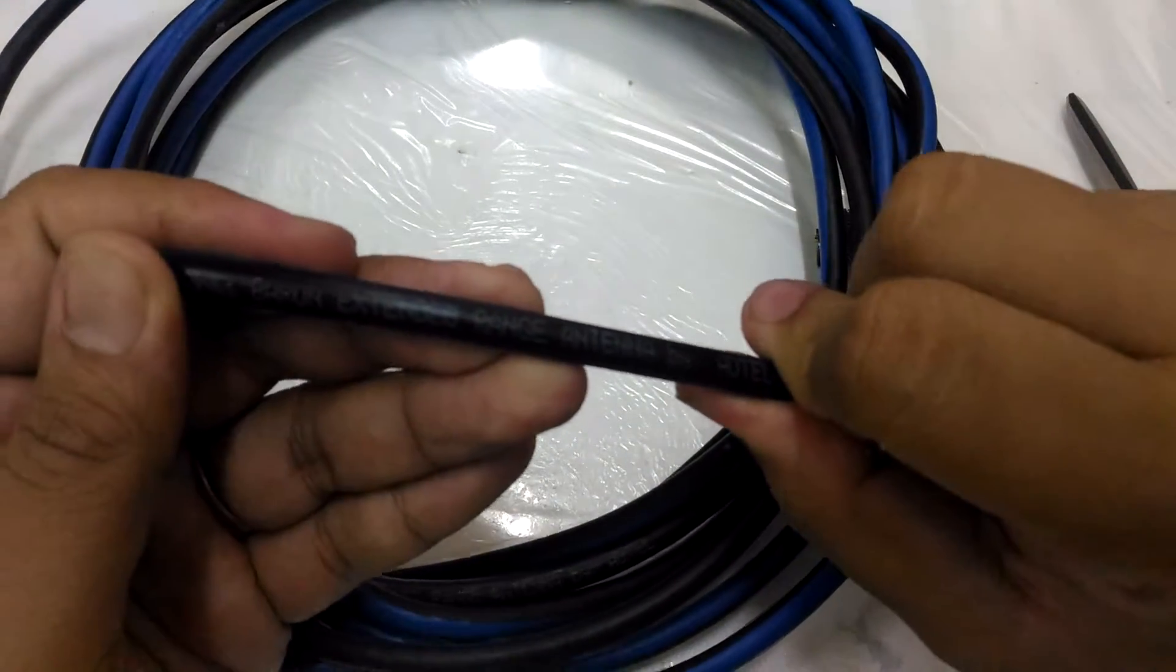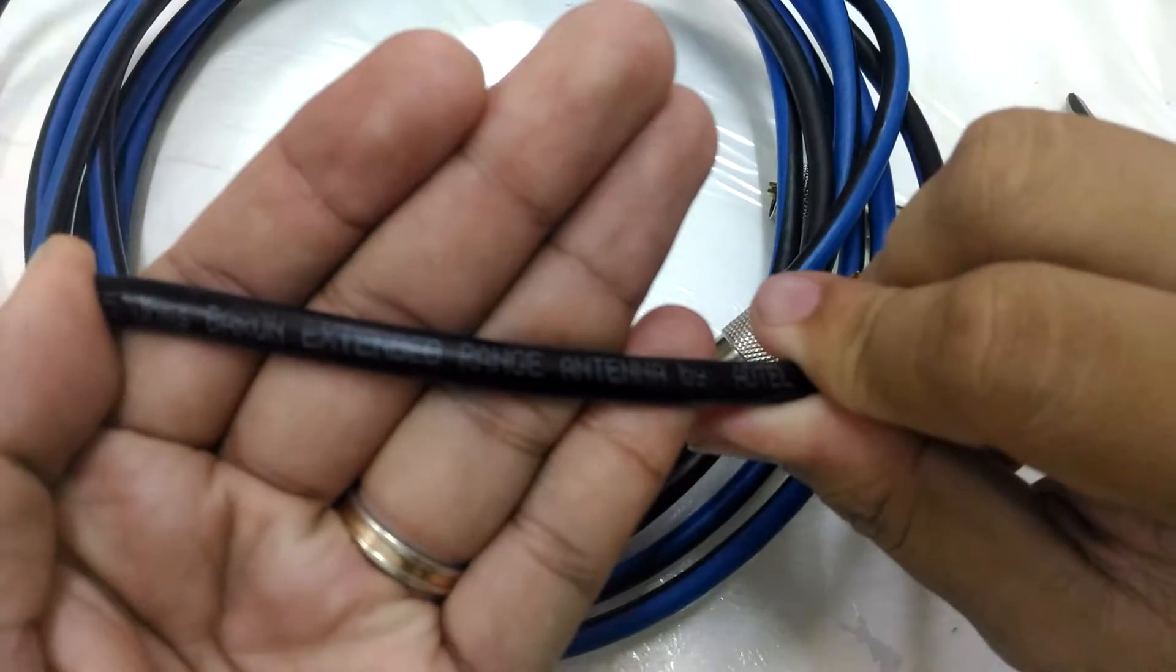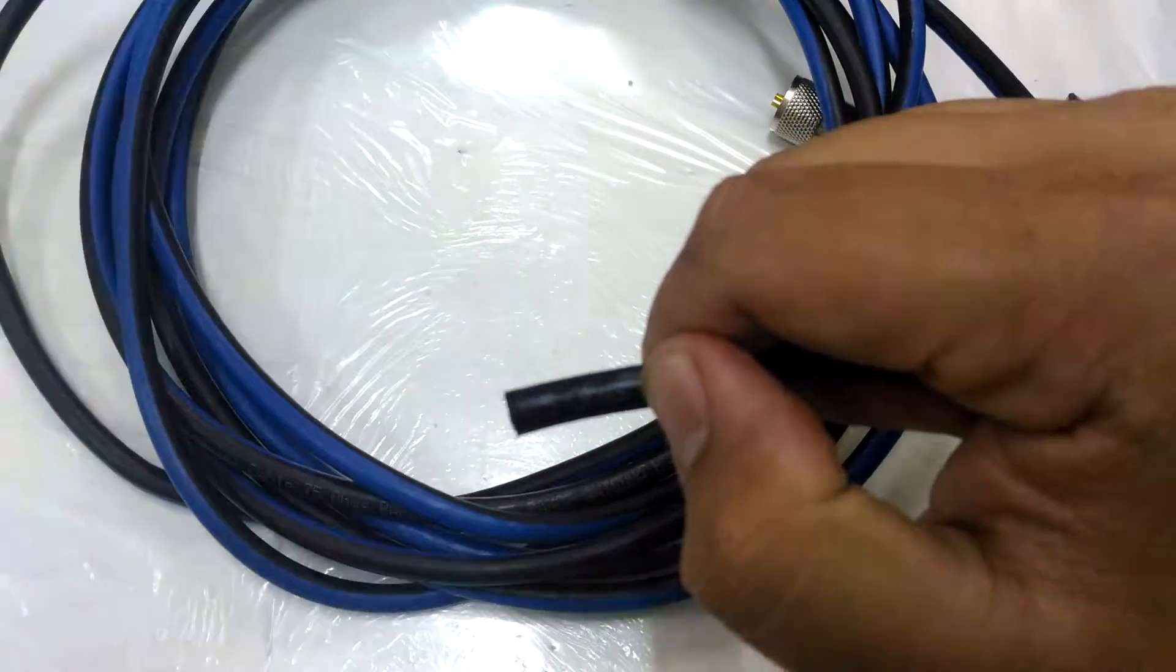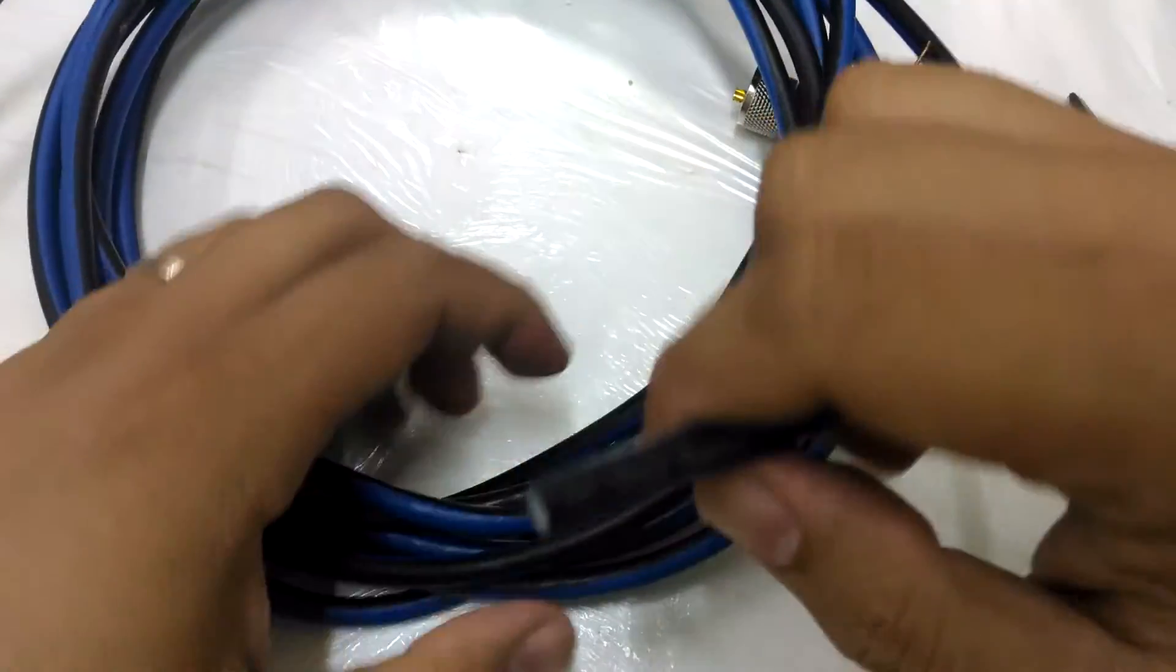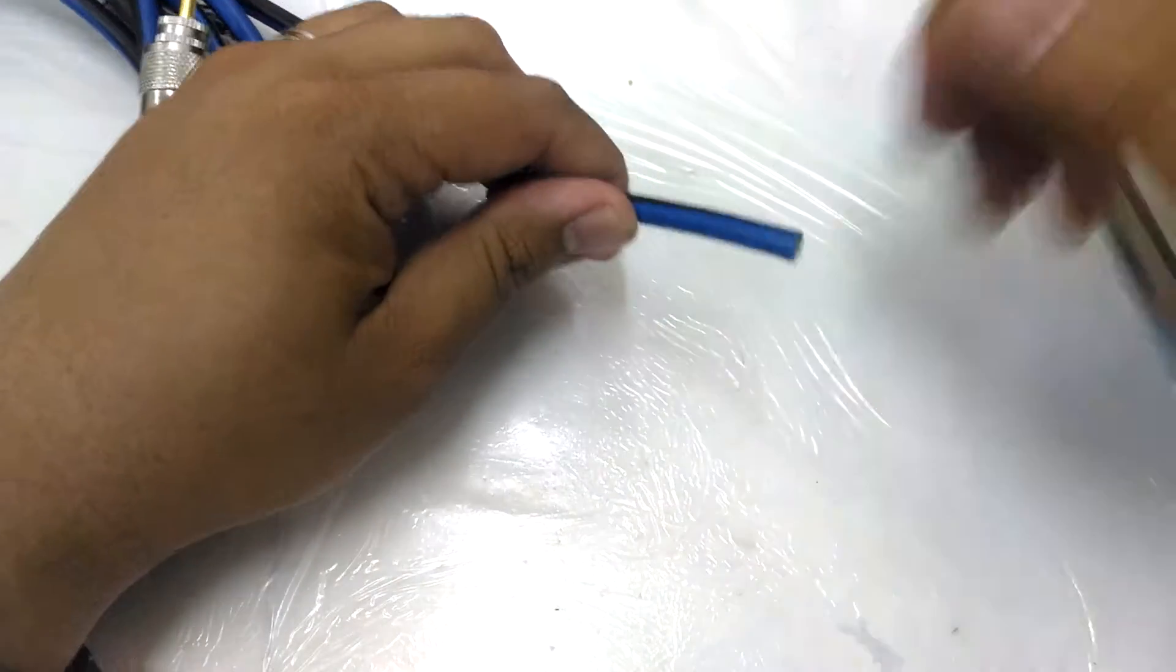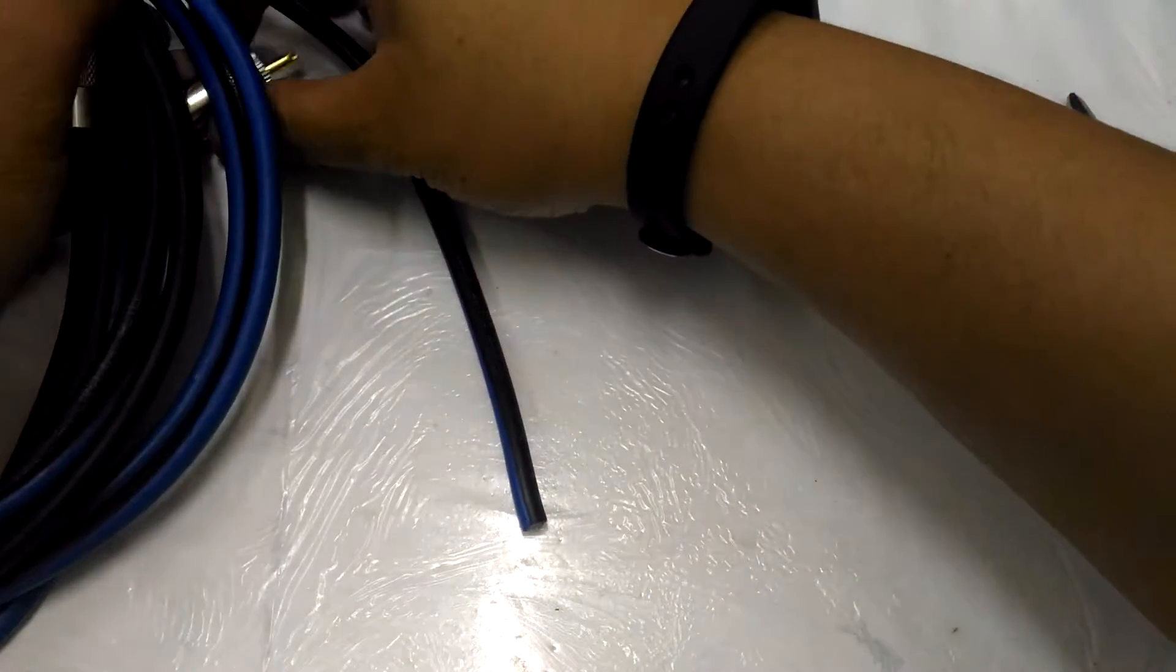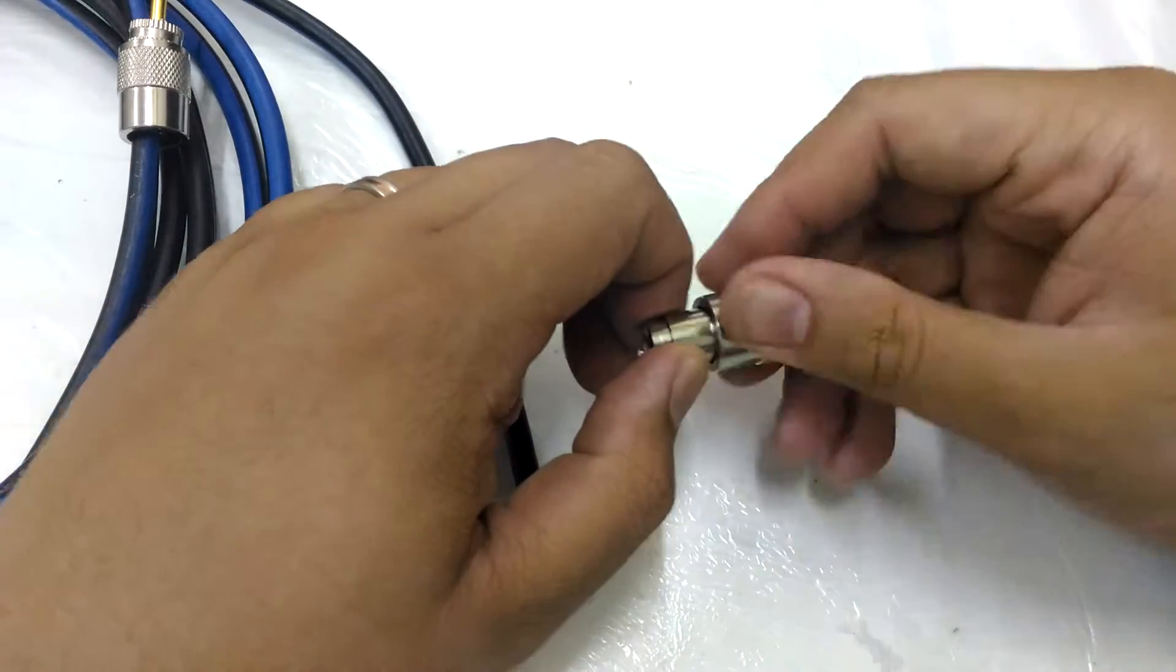This coaxial cable is for the Baron super antenna, if you know that locally produced antenna. It's 75 ohms, but ideal for ham radio is actually 50 ohms. But for the diameter of the coaxial cable, it's perfect for this PL259 connector.